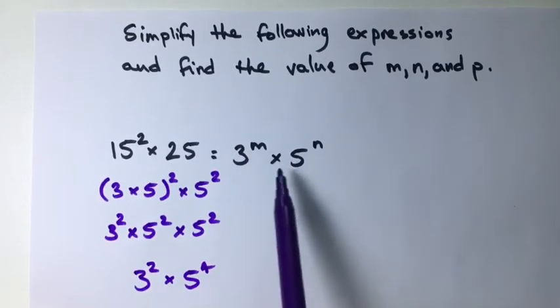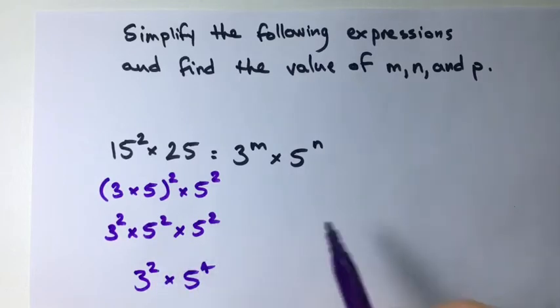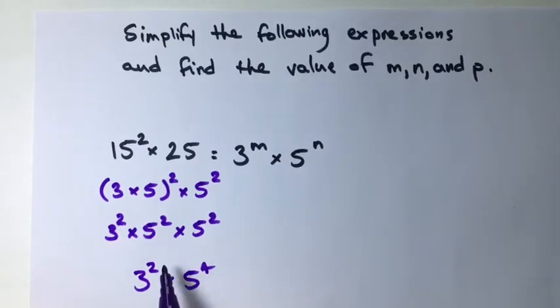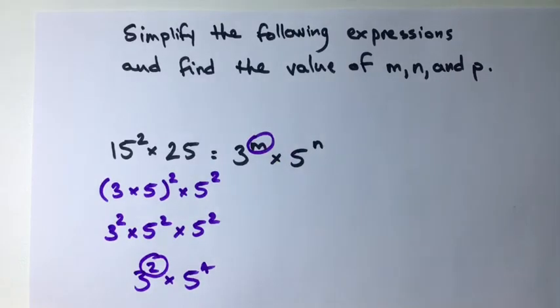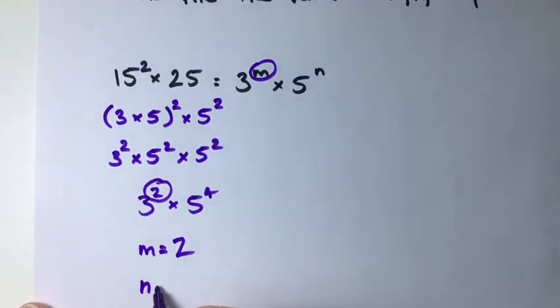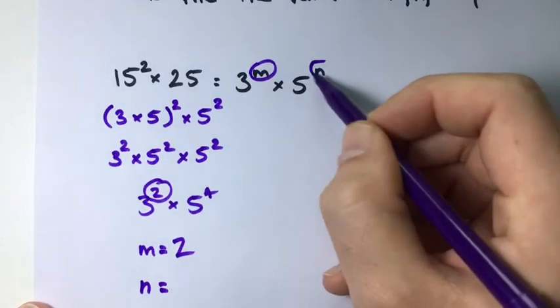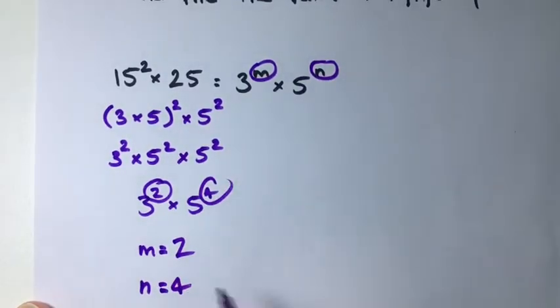Now, we can look up here, this is exactly what we need. So we can say our m is equal to 2, and our n is equal to 4.